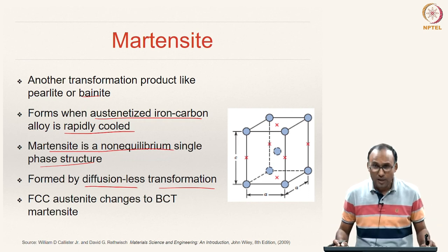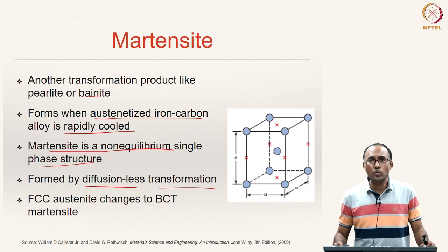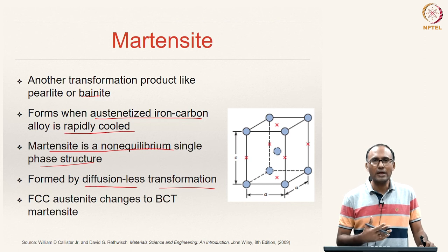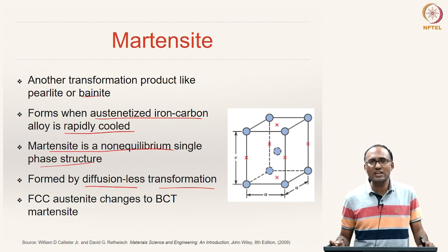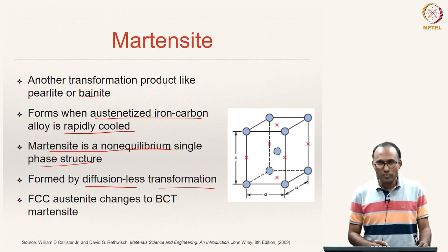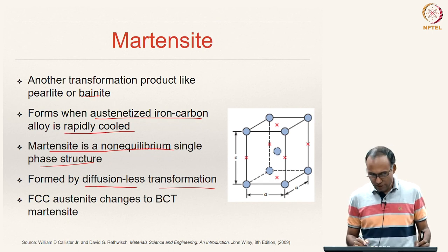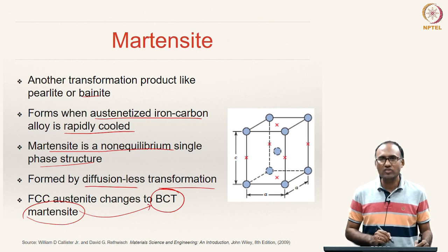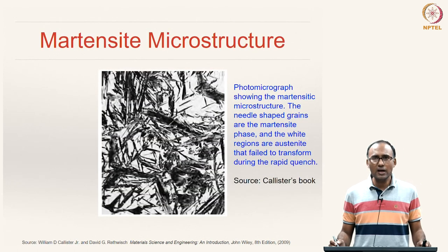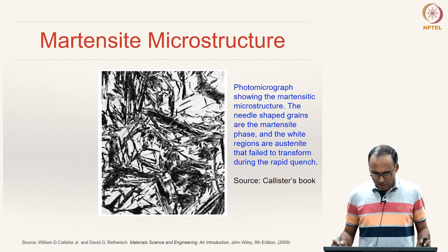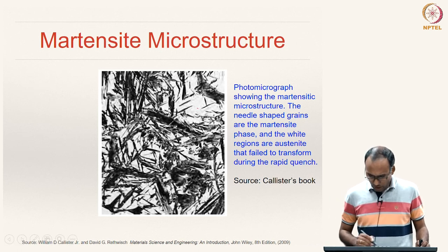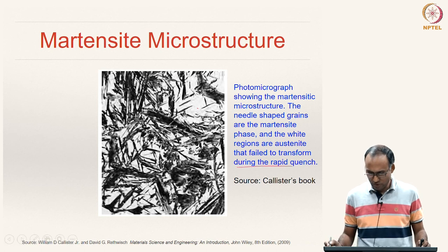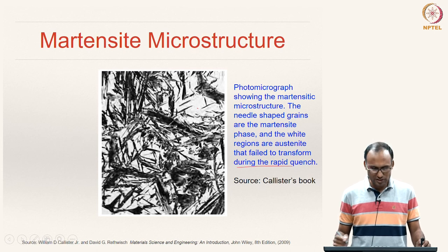If you cool rapidly, there is not enough time for carbon to diffuse out of the FCC crystal lattice. As a result, instead of changing from FCC to BCC, the carbon gets trapped and the martensite structure ends up with a body-centered tetragonal (BCT) structure instead of BCC. Under the microscope, martensite shows a needle-like microstructure; the white regions are retained austenite that failed to transform during rapid quenching, and the dark needles are martensite.